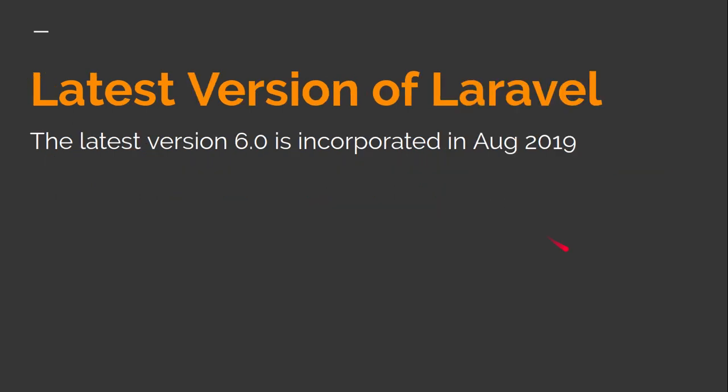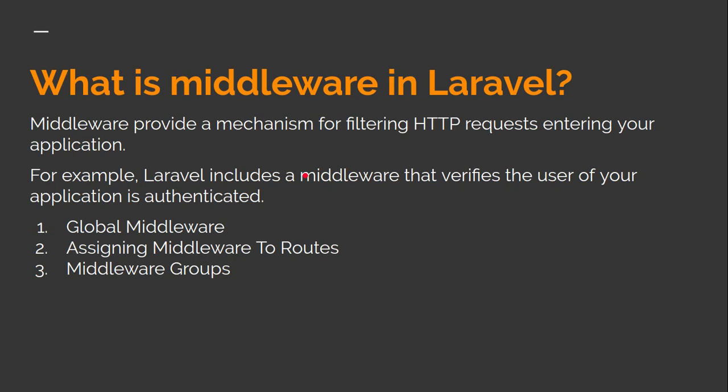Now let's move to the next question: what is the latest version of Laravel? The latest version of Laravel is 6.0, released in August 2019. If you are watching this video in 2020 or any other year, you should check out the current version of Laravel.